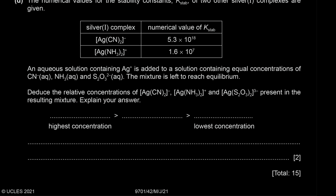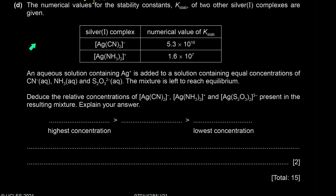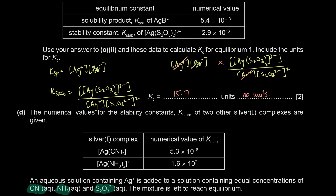Silver ions are added to equal concentrations of CN⁻, NH3, and S2O3 2−. The complex with the highest stability constant will be present at the highest concentration — that is the cyanide complex [Ag(CN)2]⁻. The ammonia complex has the smallest stability constant, so it is present at the lowest concentration. The S2O3 complex is intermediate.